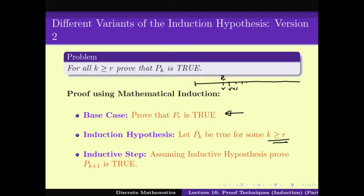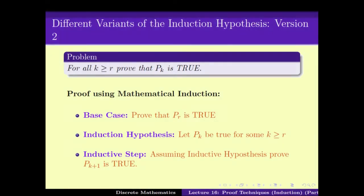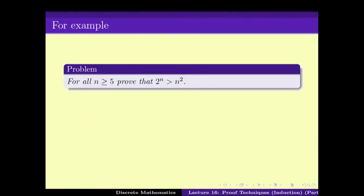Now let's see that there are different versions of mathematical induction. The second version is: instead of considering a problem of the form 'for all k ≥ 1, Pk is true', if I replace 1 with some other integer R, what happens? So if I ask: for all k ≥ R, is Pk true — how do you solve it?